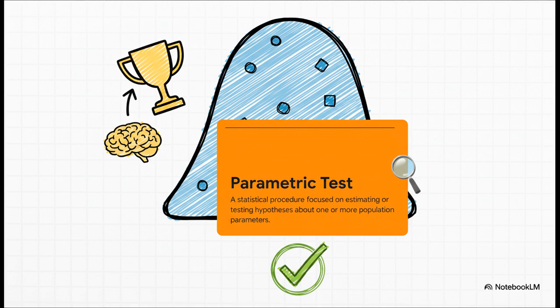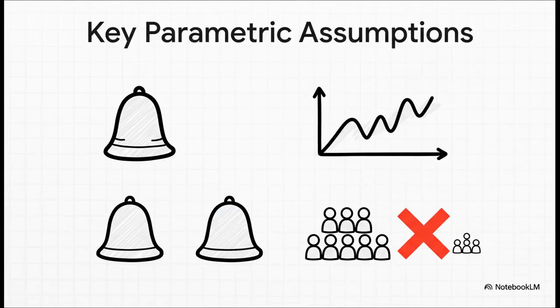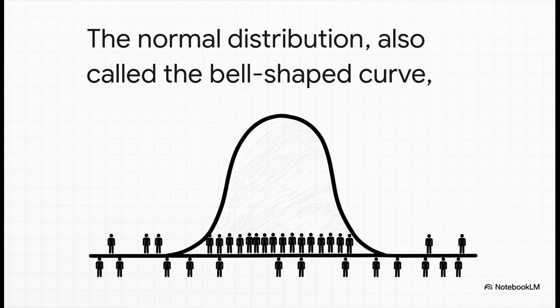It's built on the idea that your data comes from a population that behaves in a predictable way. The most famous rule — the big kahuna — is that the data should follow a normal distribution, that classic bell curve shape. The data also needs to be continuous, things you can actually measure rather than just categorize, like blood pressure or body weight. The groups you're comparing should have a similar spread of data, and you generally need a decent-sized group of people for the math to really work. Here it is: the ideal world, a perfect bell curve. If we measured the height of thousands of people, this is basically what it would look like — most people clustered around the average in the middle, with fewer at the super tall or super short ends. It's clean, symmetrical, and predictable.